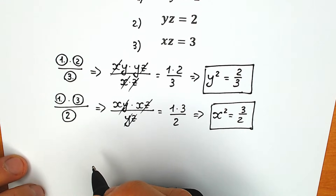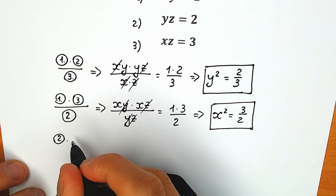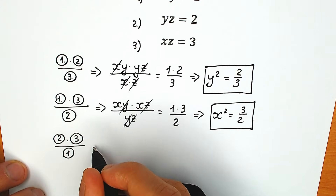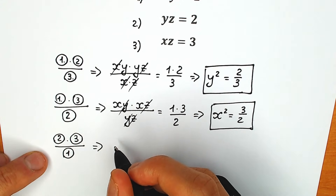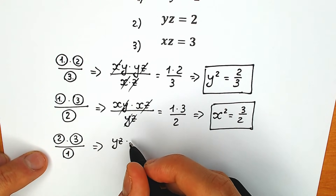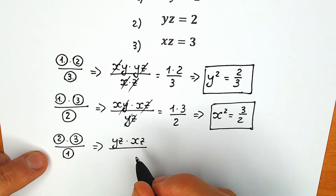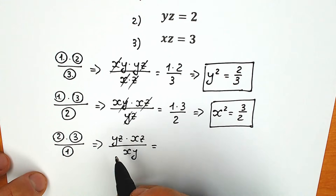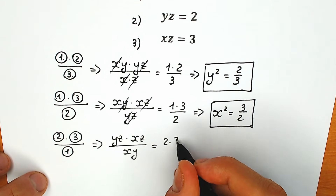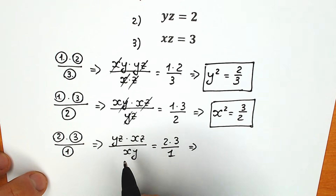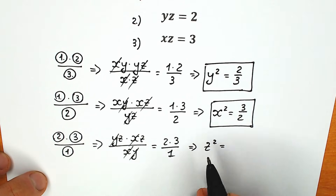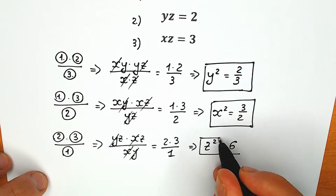And the last combination: let's multiply our second equation by the third equation, and divide by the first one. We have yz times xz, divided by xy. In terms of values: yz equals 2, xz equals 3, divided by xy equals 1. On the left side we cancel x and x, y and y, leaving only z squared. On the right side: 2 times 3 equals 6, divided by 1 equals 6. So z squared equals 6.